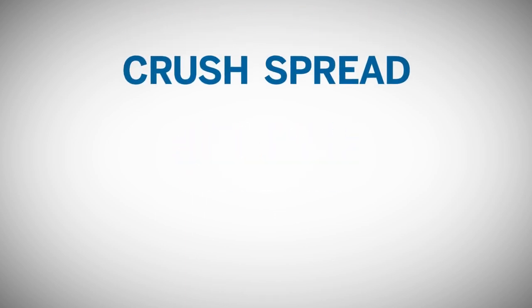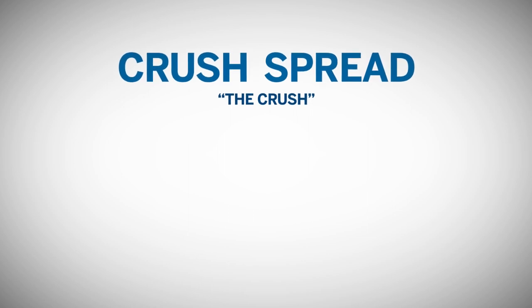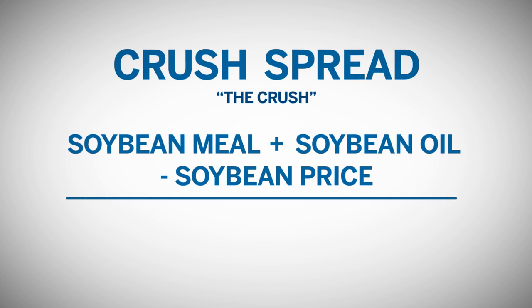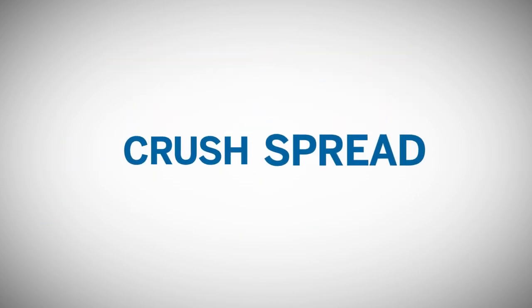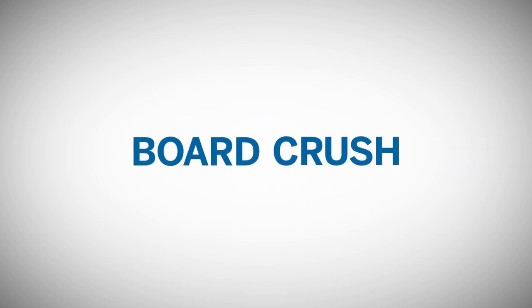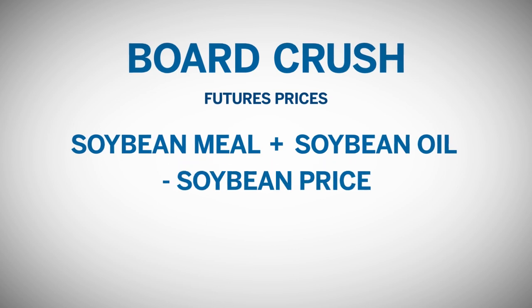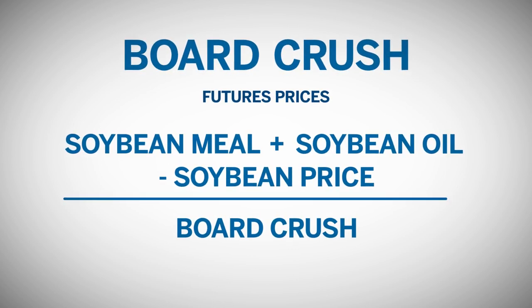The crush spread, also sometimes referred to as simply the crush, refers to the difference between the value of soybean meal and oil and the price of soybeans and represents the gross processing margin from crushing soybeans. The value of the crush spread is known as the board crush when calculating using futures prices and is considered a gauge, though not an exact indication, of the profitability of processing soybeans into oil and meal.